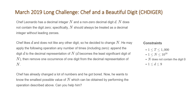The problem states: Chef Leonardo has a decimal integer n and a non-zero decimal digit d. n does not contain the digit zero — specifically, n should always be treated as a decimal integer without leading zeros. Chef likes d and does not like any other digit, so he decided to change n. He may apply the following operation any number of times, including zero: append the digit d to the decimal representation of n, so d becomes the least significant digit of n.